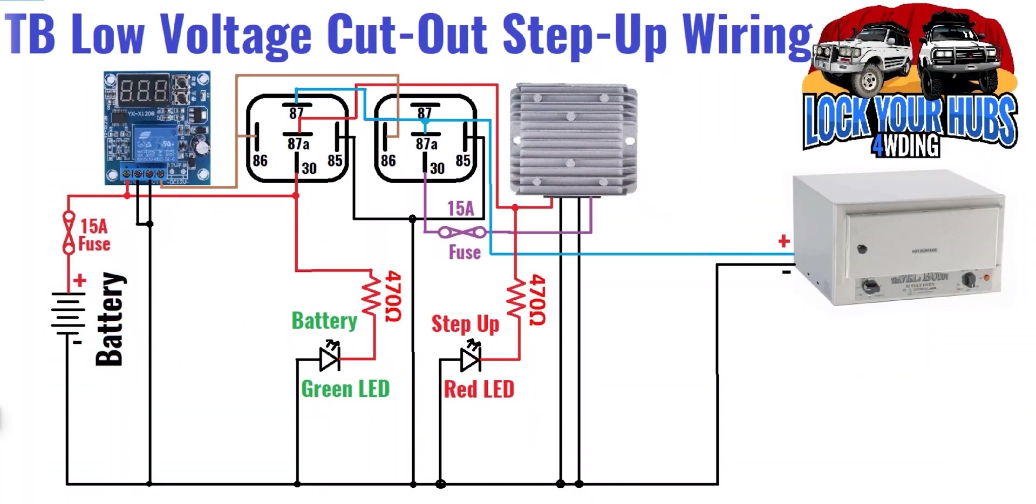Now for the crème de la crème: the Travel Buddy low voltage cutout step-up wiring diagram. It's exactly the same as the previous diagram, the difference being a low voltage cutout here. We have to provide it with battery voltage to our input, our output is connected to the relays where the ignition was connected before, and you have to provide it an earth. It turns out you only have to provide one earth, but provide it to both if you feel the need. Other than that, it's exactly the same.